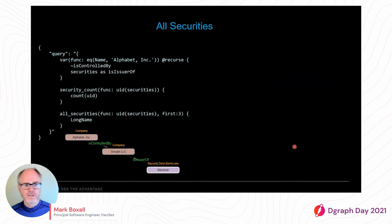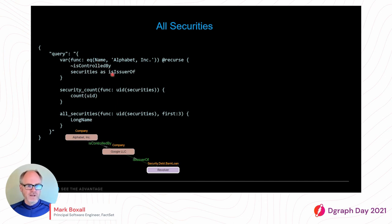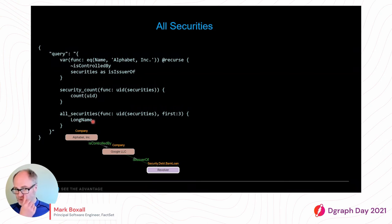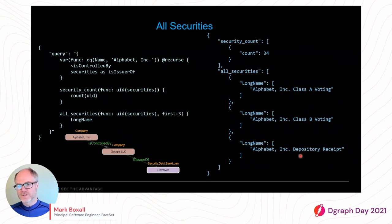Extending this query, not only do we want to pull in subsidiaries, but we also want to see what securities are issued at any level in that subsidiary tree. To do that, we pull in the 'is issuer of' edge, going one step further in the recursive traversal. Those securities are stored in a variable, we count them and pull out the long name for the first three. In total, across all subsidiaries, we're picking up 34 securities — including a Class A and Class B common stock and something known as a depository receipt.